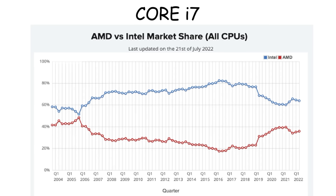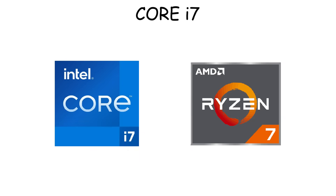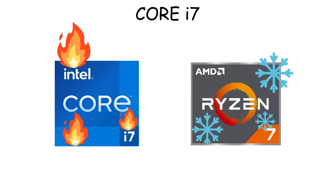People these days often prefer AMD instead of Intel, especially for the high-end tier like Core i7 versus Ryzen 7. Because while Intel CPUs still perform well, Ryzen processors generally have cooler temperatures at similar or lower prices and offer better performance.